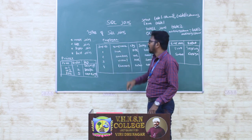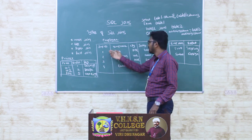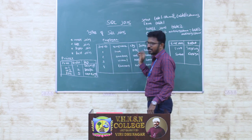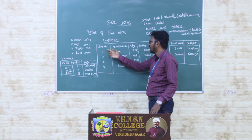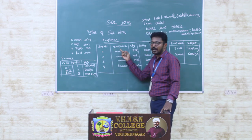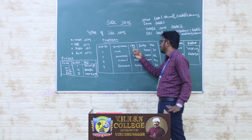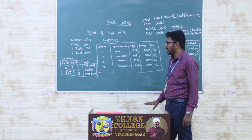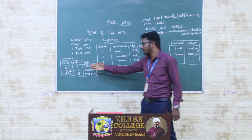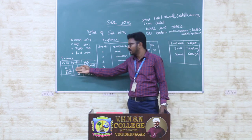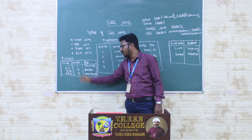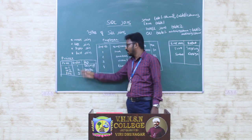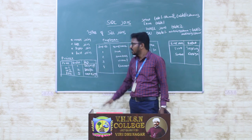The employee table has the following columns: Employee ID, Employee Name, City, Salary, and Age. The project table has: Project Number, Employee ID, and Department.